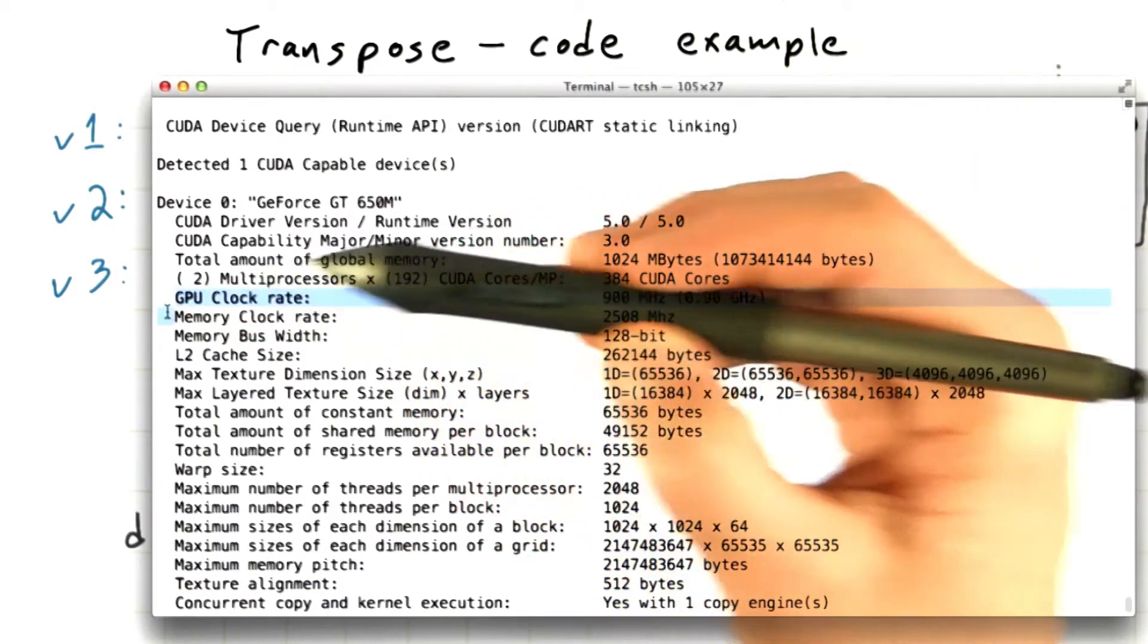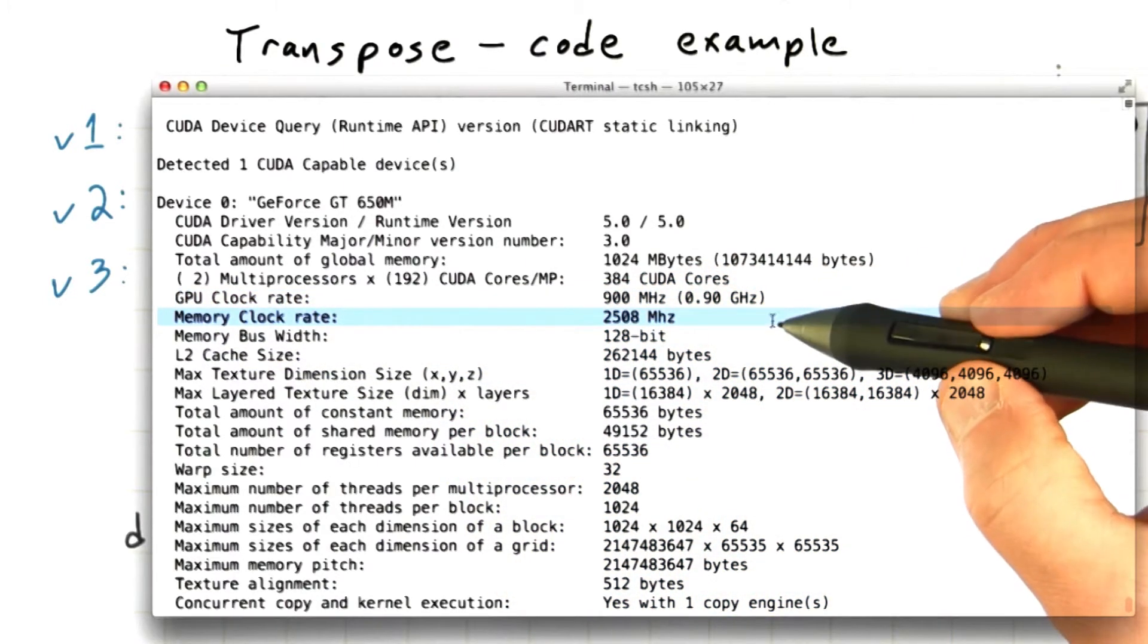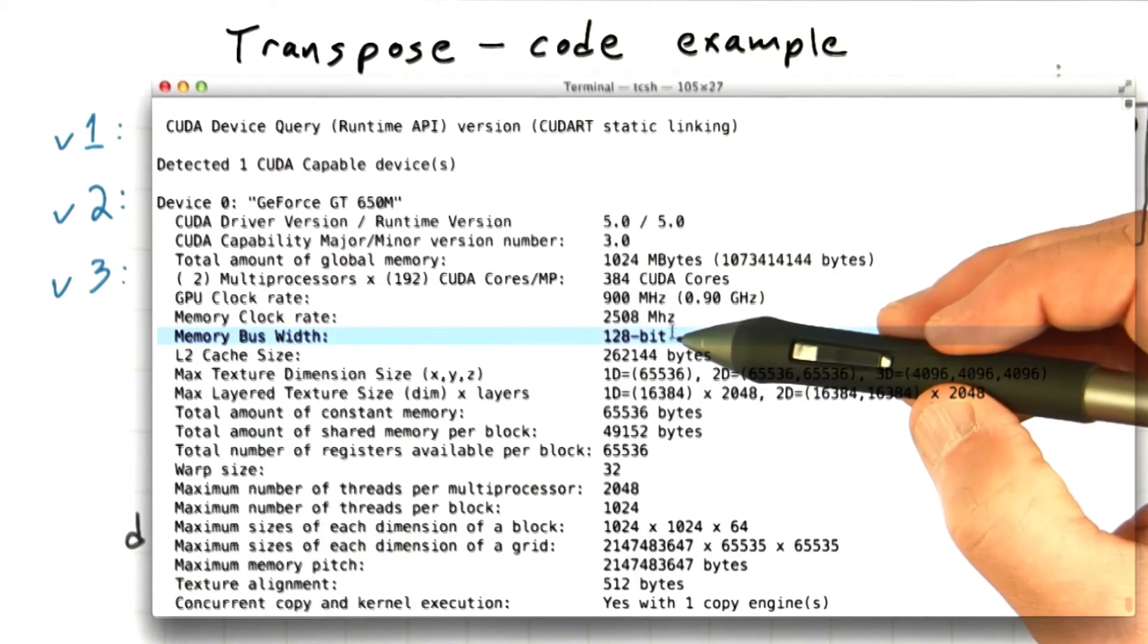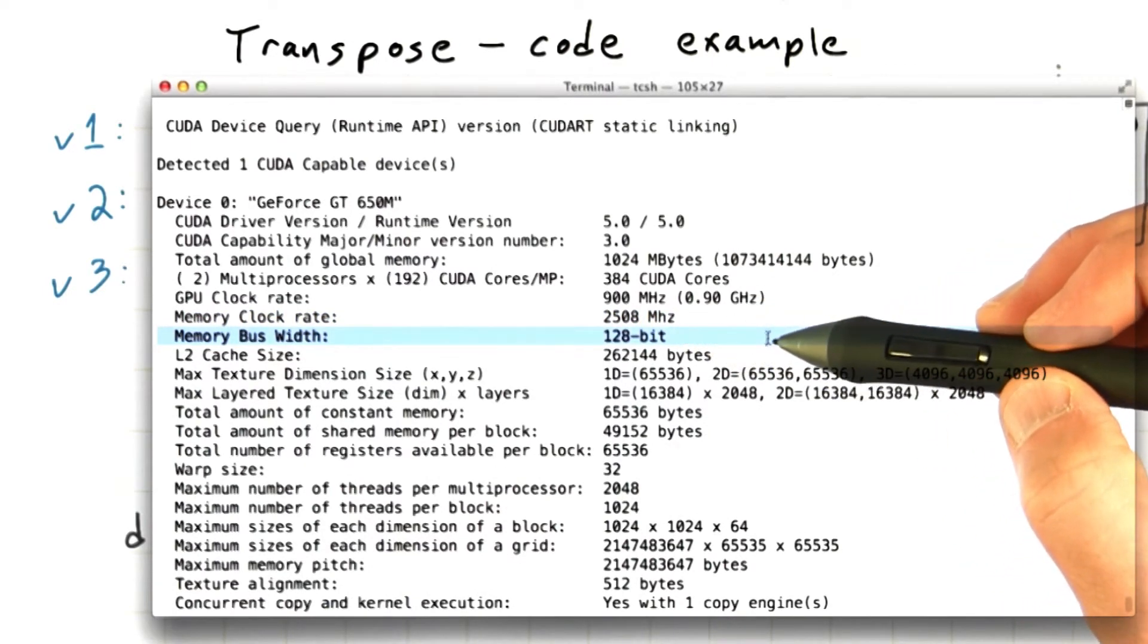The GPU clock rate is how fast the actual processors in the GPU are going. Memory clock rate shows you how fast the memory in the GPU is operating. And the memory bus width describes how many bits of memory are actually being transferred for each of these clock cycles. So from this we can actually figure out the maximum speed of the memory, the maximum bandwidth, the maximum amount of data that we can transfer in a second.